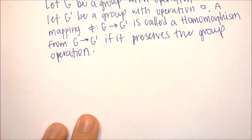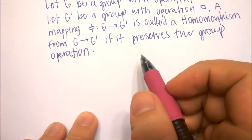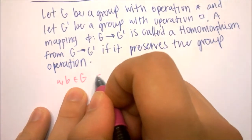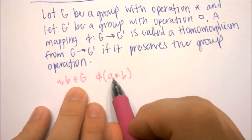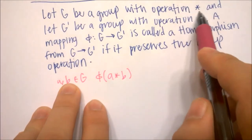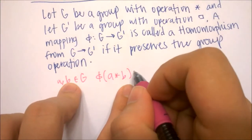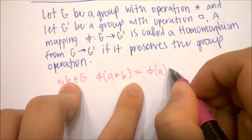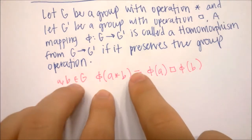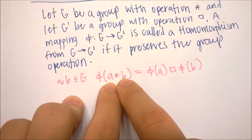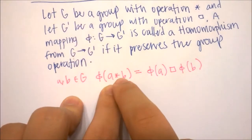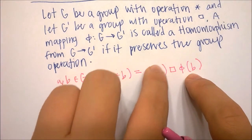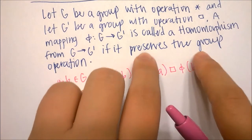What do we mean by preserving the group operation? If we have two elements A and B in G — so A and B are in our domain — then phi of A star B, because our inputs are elements of G and our operation is star with respect to G, will be equivalent to phi of A box phi of B. What we mean is: you can take A and B, apply G's operation to them, then put the result through the mapping, and get the same thing as if we took A and B individually through the mapping and then applied the operation under G prime.